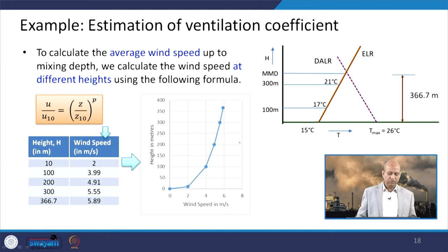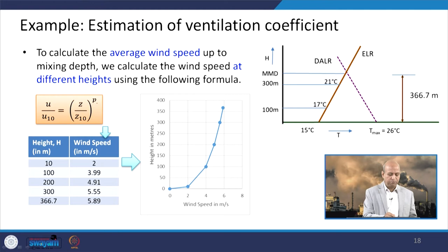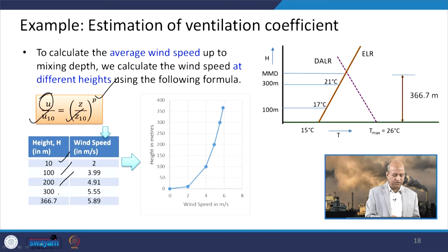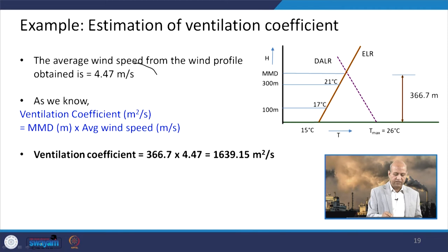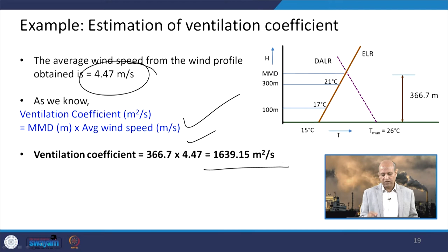Now we calculate wind velocity at different heights — 10, 100, 200, 300, and 366.7 m — using the power law with P = 0.3 and U at 10 m = 2 m/s. The average wind speed within the mixing depth is 4.47 m/s. Multiplying this by the maximum mixing depth of 366.7 m gives the ventilation coefficient of approximately 1,639 m²/s. In winter, mixing depth is generally low, so the ventilation coefficient and dispersion potential are also low.